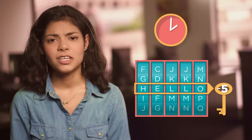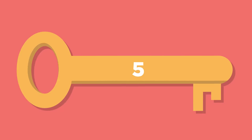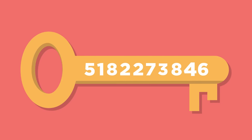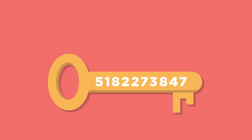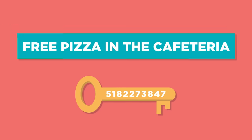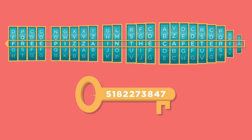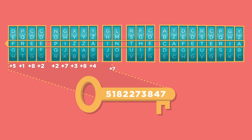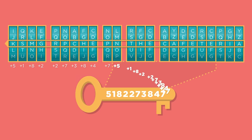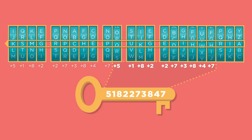So let's make it harder. Instead of shifting every letter by the same amount, let's shift each letter by a different amount. In this example, a 10-digit key shows how many positions each successive letter will be changed to encrypt a longer message.